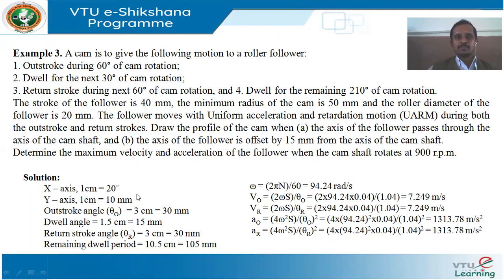The follower moves with uniform acceleration and retardation during both outstroke and return strokes. To construct the displacement diagram, we select a suitable scale: along the x-axis, 1 cm equals 20°; along the y-axis, 1 cm equals 10mm. With this scale, the outstroke angle becomes 3 cm (30mm), the first dwell becomes 1.5 cm (15mm), the return stroke becomes 3 cm (30mm), and the remaining dwell becomes 10.5 cm (105mm).